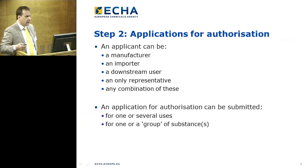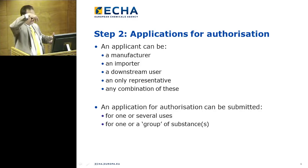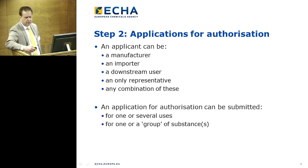The applicants — who can they be? They can be almost anybody who's using the substance: manufacturer, importer, downstream user, only representative, or any combination of the above. An application for authorization can be submitted for one or several uses, or for one or several groups of substances. Some pragmatism is prevailing on the applicants' side to ensure that the applications are coherent packages, and that's what they've been so far.